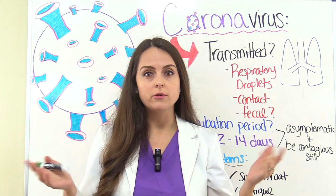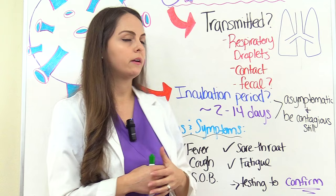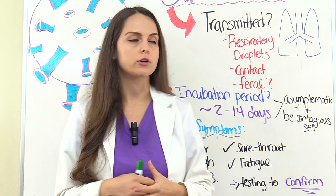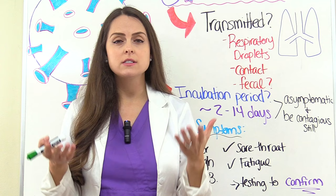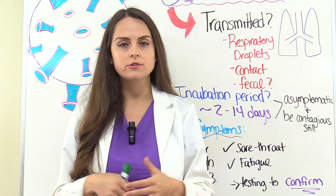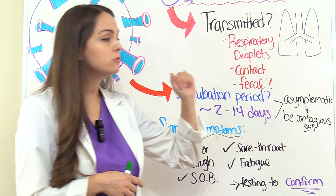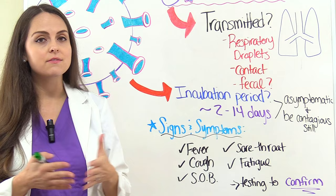What is the incubation period — meaning the time from exposure to first showing signs and symptoms? The CDC says it's anywhere between 2 to 14 days. That is why when someone is suspected of having COVID-19, they are put in quarantine for two weeks while being monitored for signs and symptoms. It's also important to note that patients with COVID-19 may be asymptomatic — they don't have symptoms yet — but they could still be contagious.